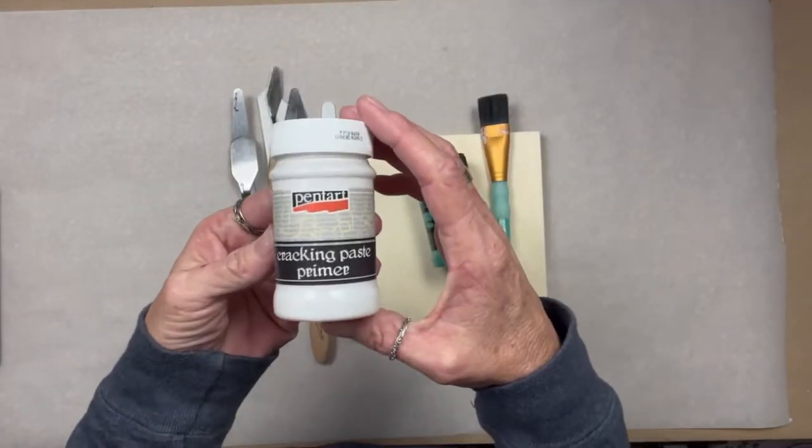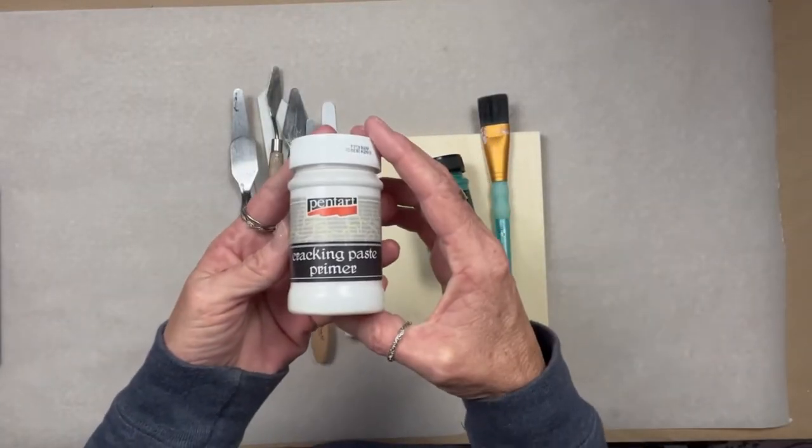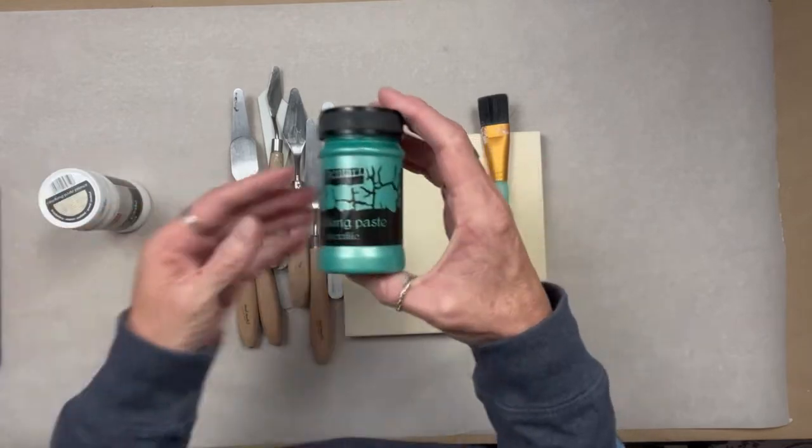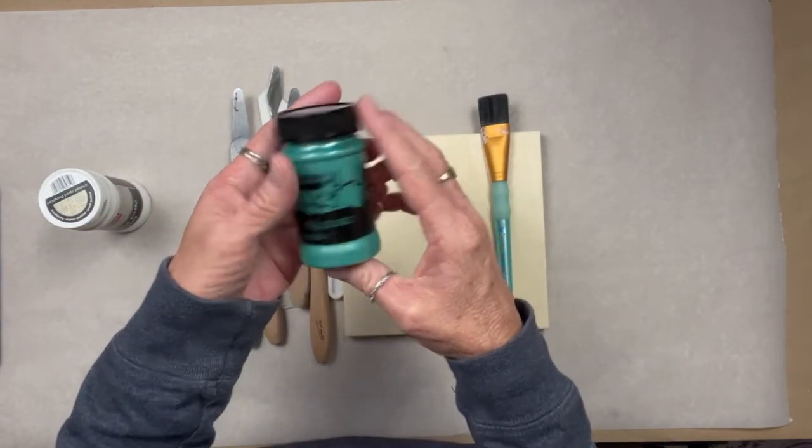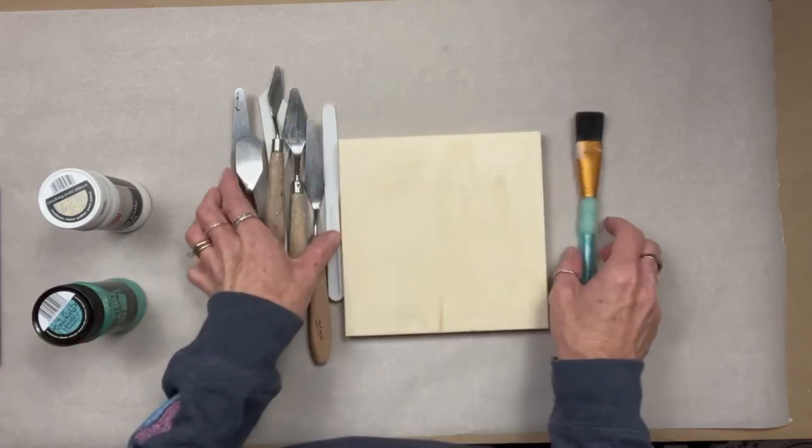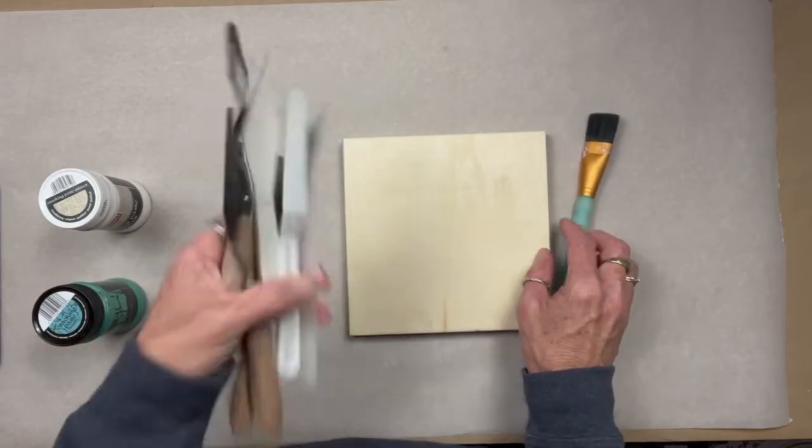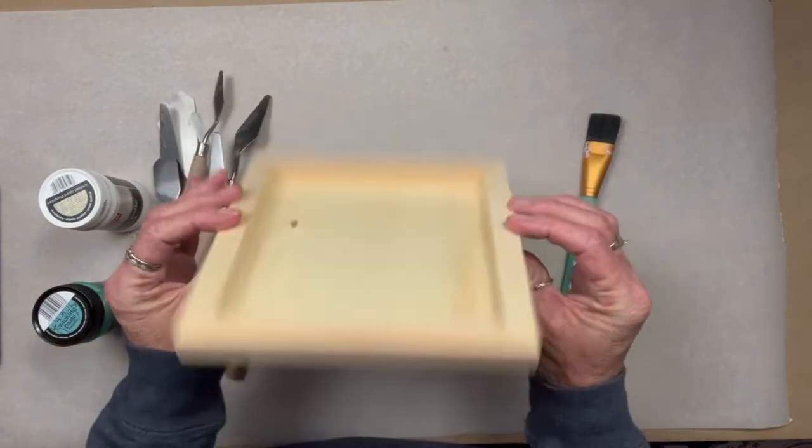Hey folks, this is Tracy with Scrappy's Rustics. OMG! We're gonna use some Pentart Cracking Paste. Woo-wee! It is so good. We're using Pentart Cracking Paste Primer and Pentart Cracking Paste Metallic in the color Silvery Turquoise.